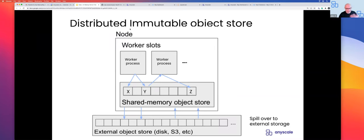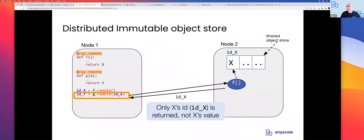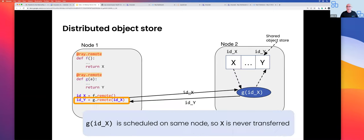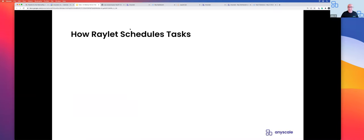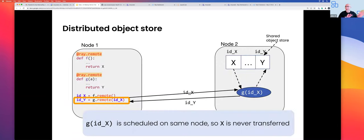Here's how data locality works in practice. If node one executes a task returning value X, and I call G.remote() passing that object reference, G gets scheduled on node two due to data locality and reads data from shared memory — no IPC needed. The object store and asynchronous task execution together allow running things at massive scale. Tasks run in the background; if they're long-running, ray.get() will wait until they finish.